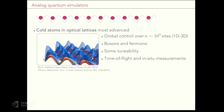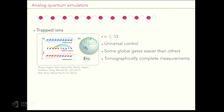There's progress on realizing programmable potentials, which is an interesting further perspective. Next on the list is trapped ions — these are way smaller, like up to 53 qubits in an experiment to be reported on tomorrow. These are devices where one has pretty much universal control, although some global gates like Mølmer–Sørensen gates are easier than others. One can do in principle a universal set, and also gain tomographic knowledge at the end — for example, with compressed sensing techniques one can learn about the state at pretty large system sizes.